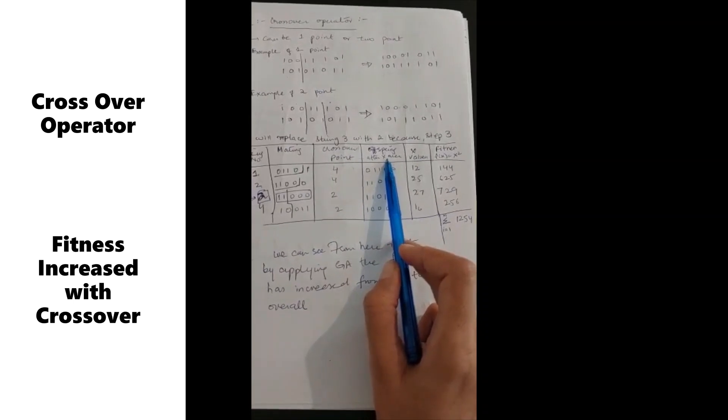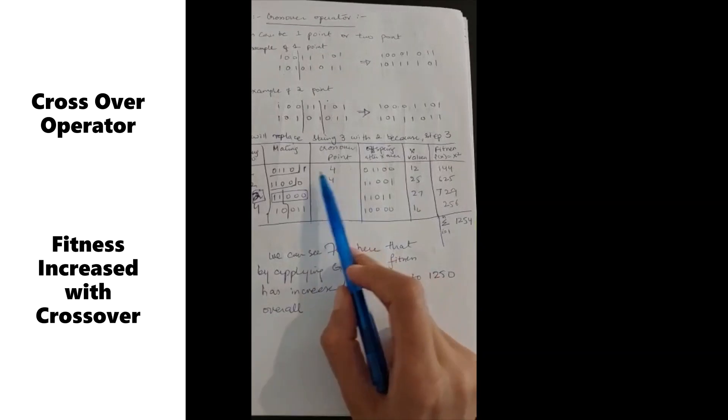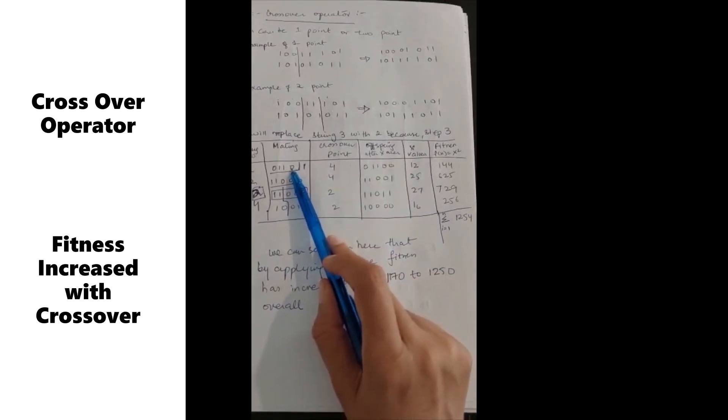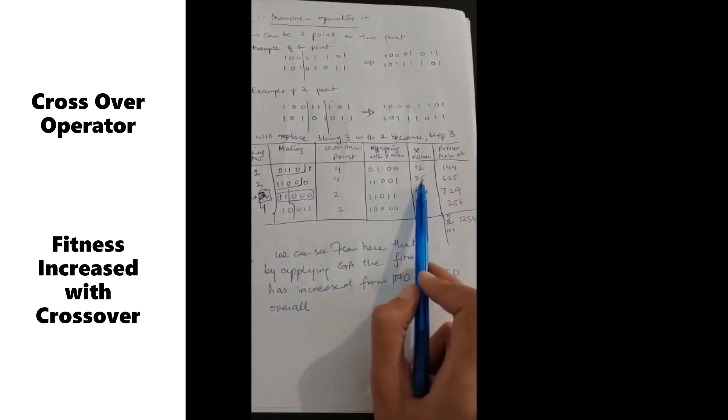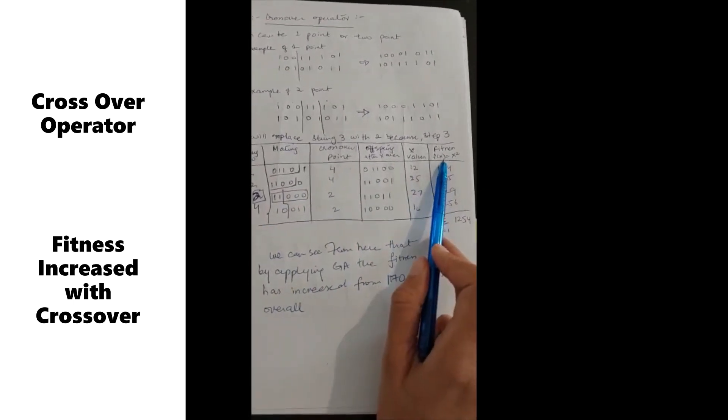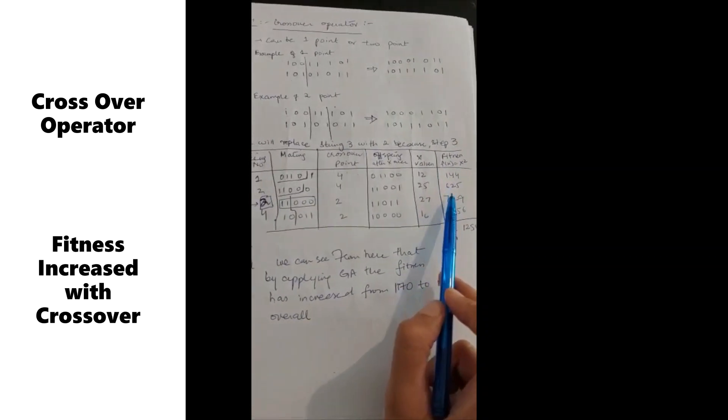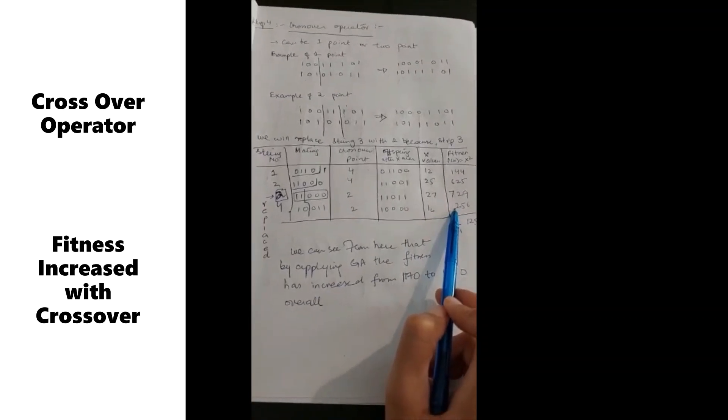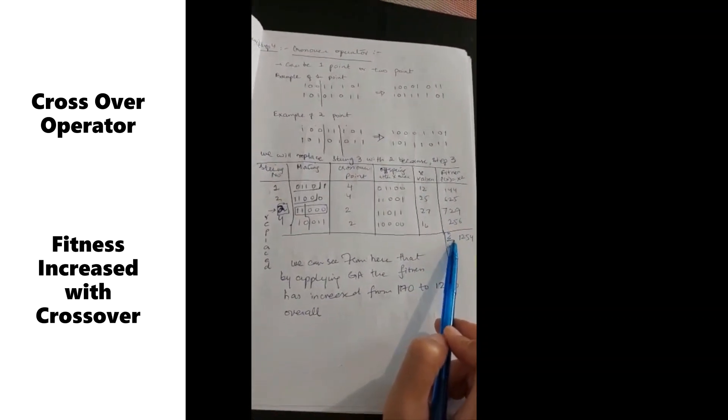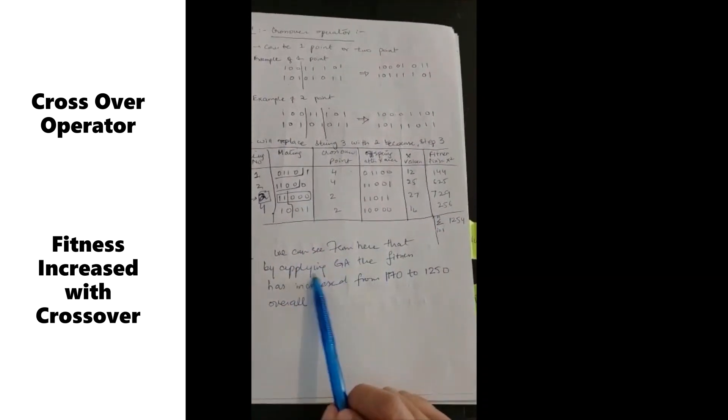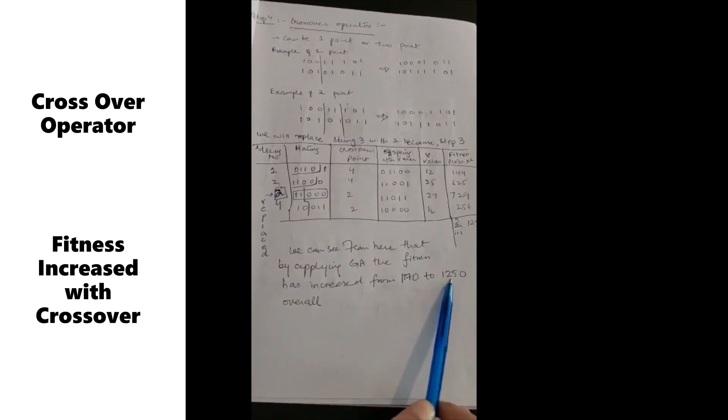These are the offsprings after crossover. Now you apply the fitness function which is f(x) = x squared. When you applied it, you can see that the same values which were the original strings, all the fitness functions will increase. When you have the sum, the sum will increase. By applying genetic algorithm, the fitness has increased from 1170 to 1250.